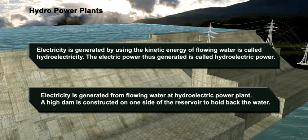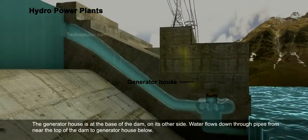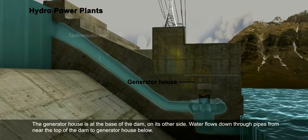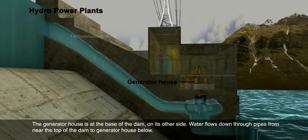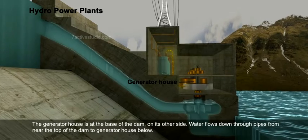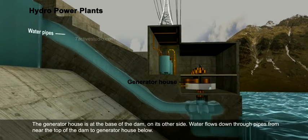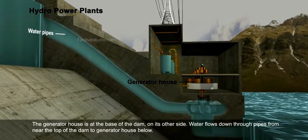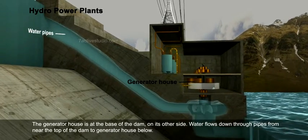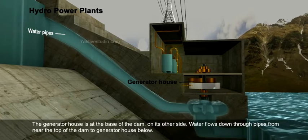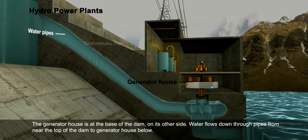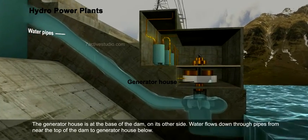A high dam is constructed on one side of the reservoir to hold back the water. The generator house is at the base of the dam on its other side. Water flows down through pipes from near the top of the dam to the generator house below.